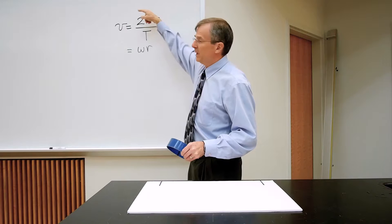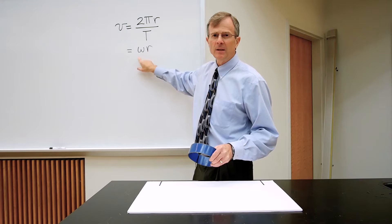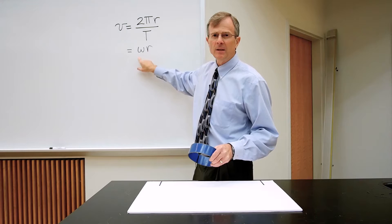But 2π divided by the period T is defined as the angular speed, ω. So this equation, v = ωr, gives the speed of a wheel or any circular object that rolls without slipping.